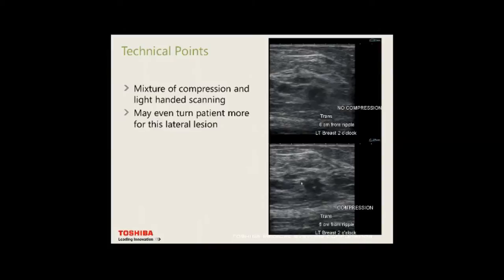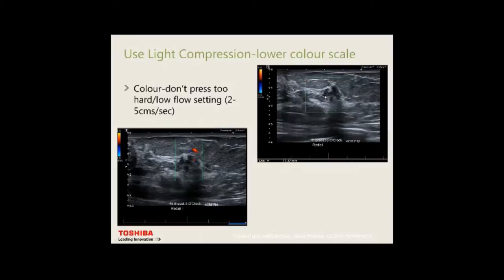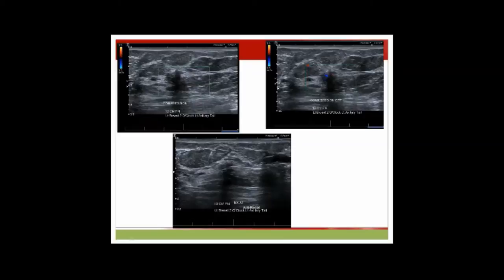When scanning, it's a mixture of compression and light-handed scanning. This lady had a very small 4 mm lesion at 2 o'clock in the left breast; the student couldn't find it after 4-5 passes. Using compression in that region is very important — you will miss lesions if the breast is too floppy. However, when using colour, don't compress too hard because the fine vessels within a lesion are compressible. Demonstrated here: compression and non-compression with low flow settings of 2, showing colour flow — all proven cancers.